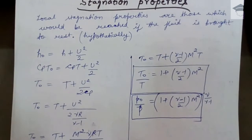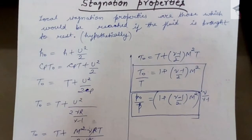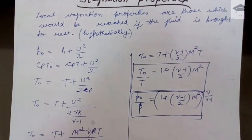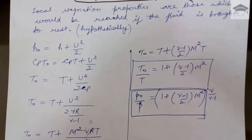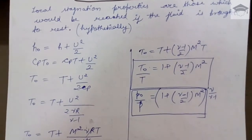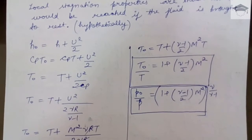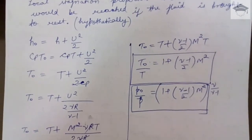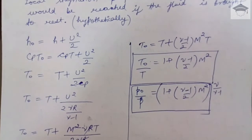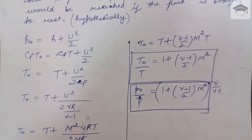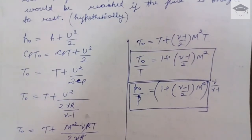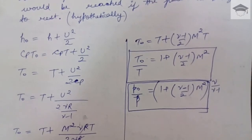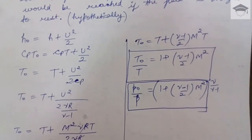Using the energy equation, h₀ = h + u²/2, where h₀ is the stagnation enthalpy, h is the static enthalpy, and u²/2 is the dynamic enthalpy. Since h = Cp·T, we can write Cp·T₀ = Cp·T + u²/2, which gives T₀ = T + u²/(2Cp).